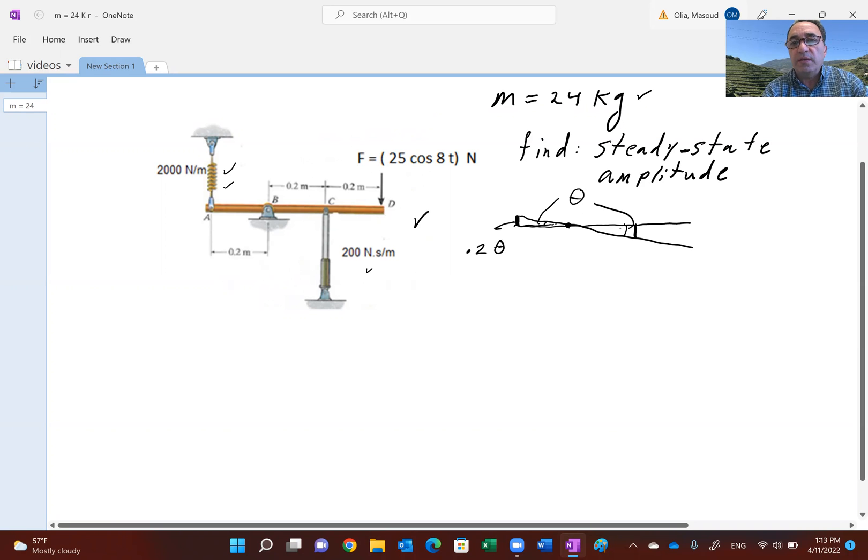Tangent of the small angle and the angle in radians are the same. Since point C is on the same distance from the pivot point, that should also be 0.2 theta.